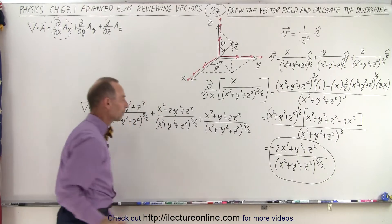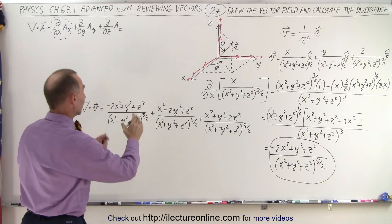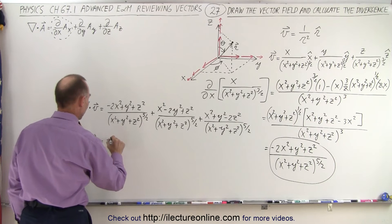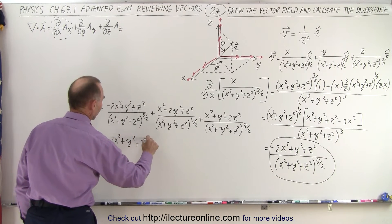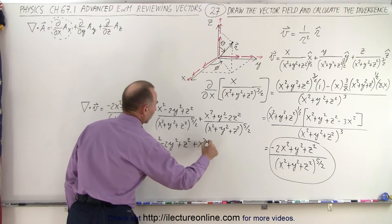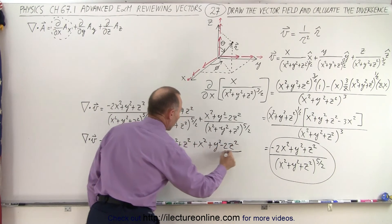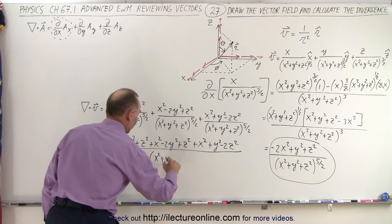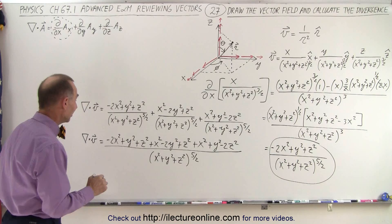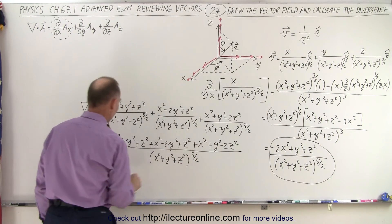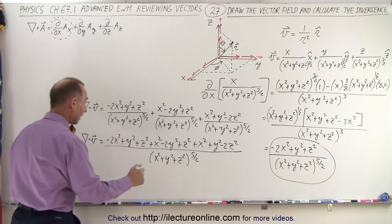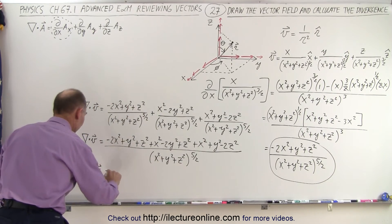Now, notice we have all the same denominators, so it can all be written over a single denominator. Del dot v equals: minus 2x squared plus y squared plus z squared, plus x squared minus 2y squared plus z squared, plus x squared plus y squared minus 2z squared, all over x squared plus y squared plus z squared to the 5 halves power. Interestingly, the x squared terms cancel — minus 2x squared plus x squared plus x squared equals zero — similarly for y squared and z squared. So the divergence of that vector is equal to 0.